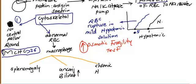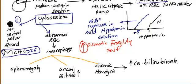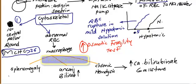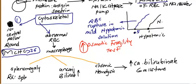In chronic hemolysis the end result is increased calcium bilirubinate gallstones. These are the main consequences of hereditary spherocytosis: increased calcium bilirubinate gallstones as a result of chronic hemolysis, unconjugated bilirubinemia, and splenomegaly. The treatment for splenomegaly in case of hereditary spherocytosis is splenectomy.